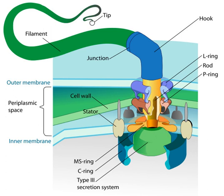Each of the outer nine doublet microtubules extends a pair of dynein arms, an inner and an outer arm, to the adjacent microtubule. These produce force through ATP hydrolysis. The flagellar axoneme also contains radial spokes, polypeptide complexes extending from each of the outer nine microtubule doublets towards the central pair, with the head of the spoke facing inwards. The radial spoke is thought to be involved in the regulation of flagellar motion, although its exact function and method of action are not yet understood.